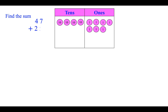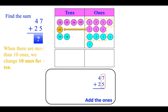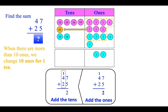Find the sum. Forty-seven plus twenty-five. First, we add the ones: seven plus five is twelve. When there are more than ten ones, we change ten ones for one ten. We add one ten to the tens place. Now we are left with two. Next, we add the tens: one plus four plus two is seven.